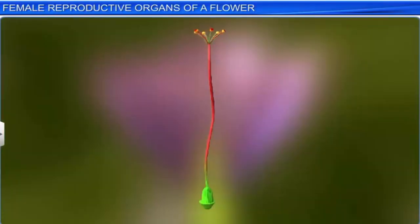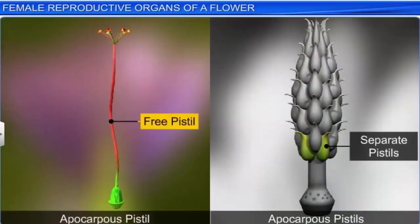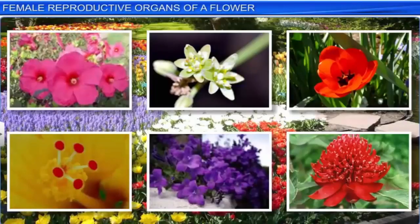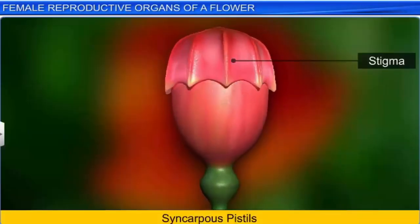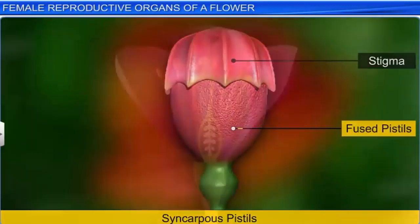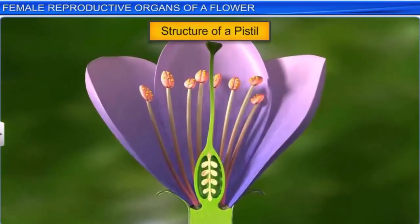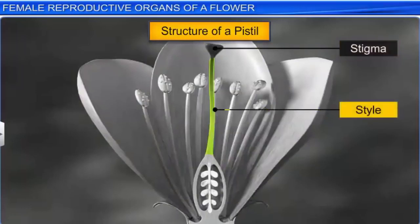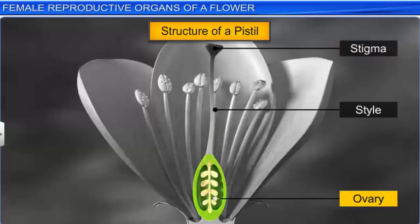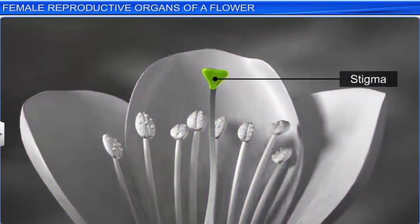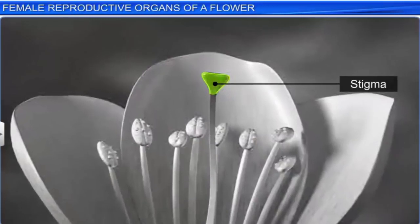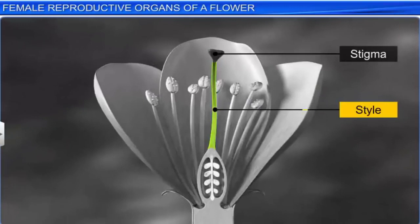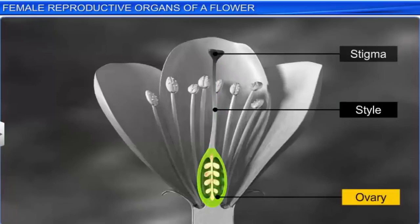Moreover, a multi-carpellary gynoecium may be apocarpous — that is, the pistils are free — or syncarpous, where the pistils are fused. If you observe the structure of a pistil, you will find that it consists of the stigma at the tip, followed by the style in the middle, and an ovary at the base. While the stigma is a landing platform for pollen grains, the style — an elongated, slender structure — connects the stigma to the ovary, the basal bulging part of the pistil.